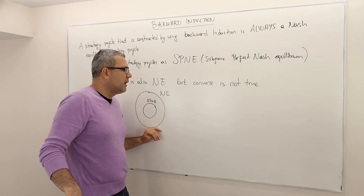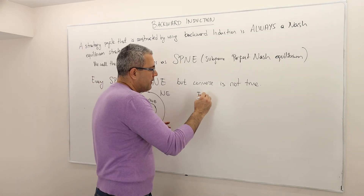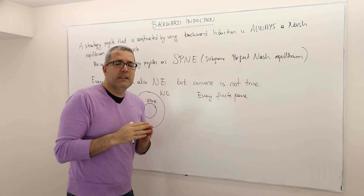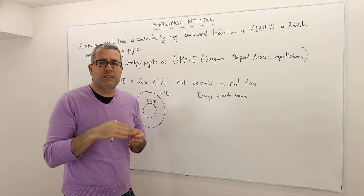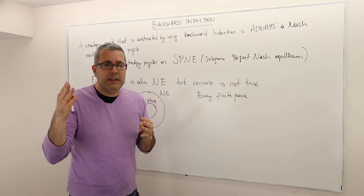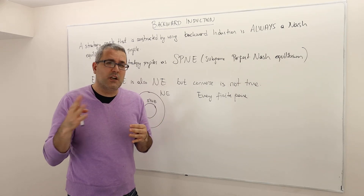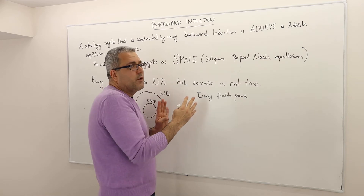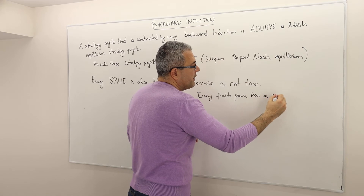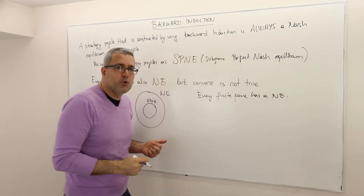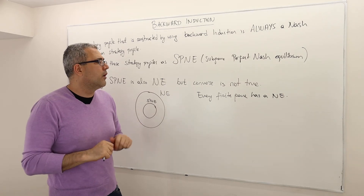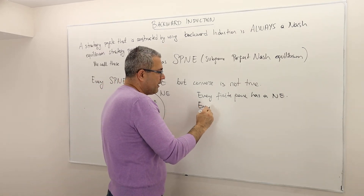One more important point: every finite game — meaning a game with a finite number of players and a finite number of strategies — has at least one Nash equilibrium, whether in pure strategies or mixed strategies. Every finite game has a Nash equilibrium.